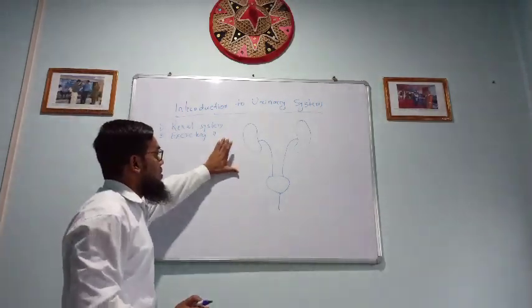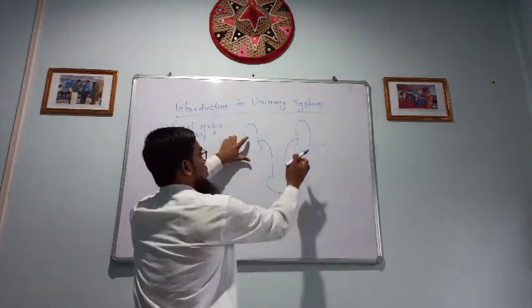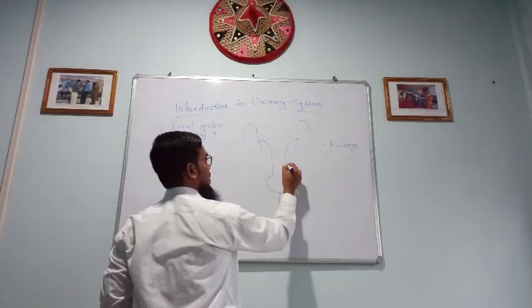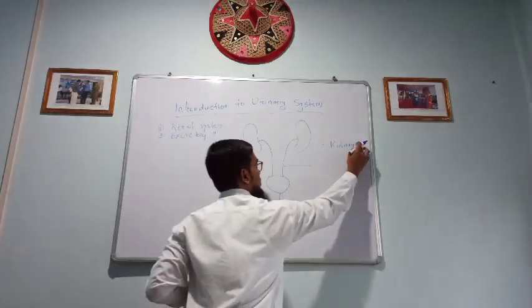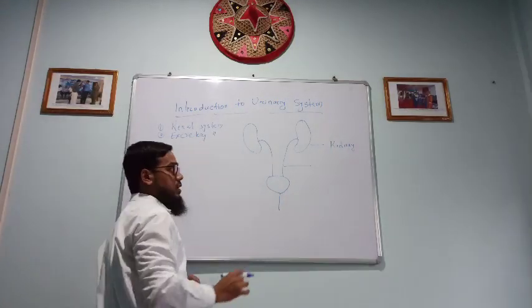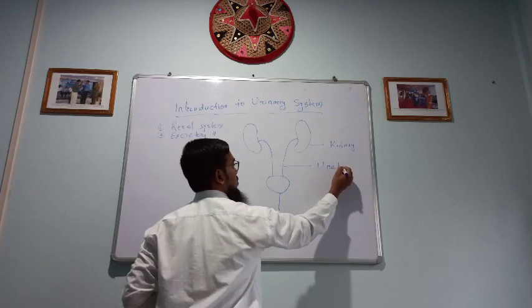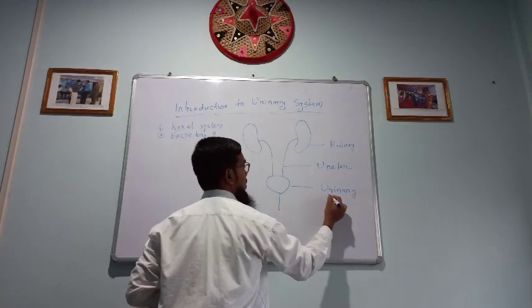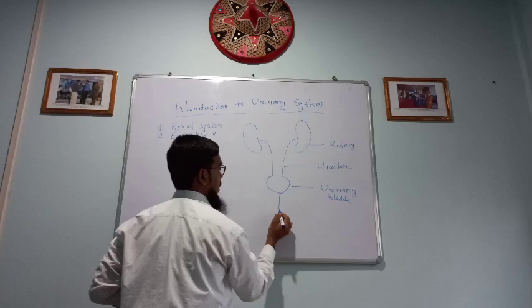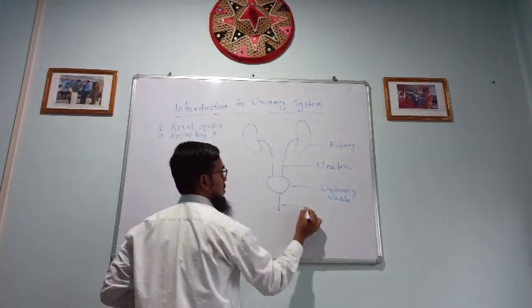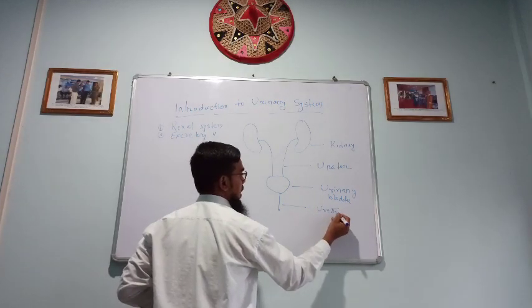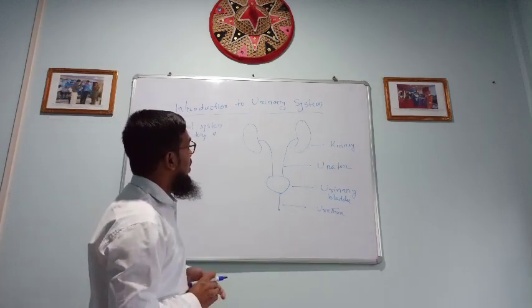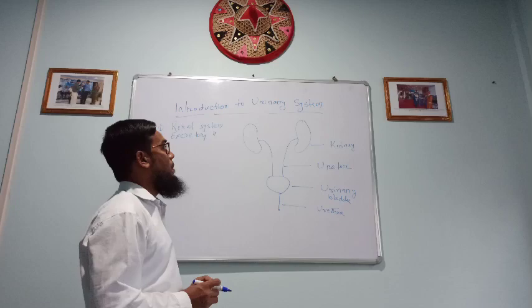It consists of urinary system consists of two kidneys, two ureters, one urinary bladder, and one opening of this urine which is called urethra. So now we will discuss the basic things of this urinary system.